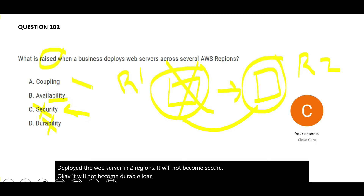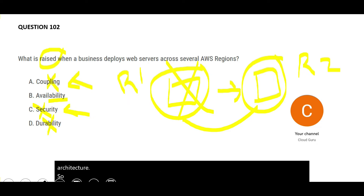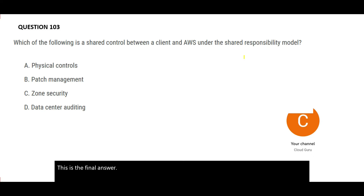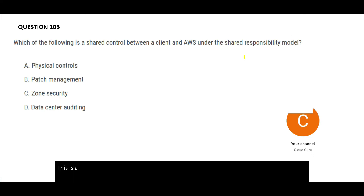Coupling is something used with microservices architecture. Multi-region deployment has nothing to do with coupling. So high availability is the final answer.